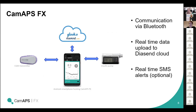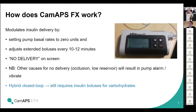Just by way of a reminder — many of you will be familiar with this — this is the CAM APS FX system: the Android smartphone which hosts the app, which acts as a CGM or glucose sensor receiver and communicates with the Dana RS, Dana R, or soon to be Dana I pump, and the data is automatically uploaded to the Diasend cloud. The system works by modulating insulin delivery, pushing the pump basal rates down to zero units and then allowing it to adjust an extended bolus every 10 to 12 minutes. This is really important in terms of understanding why certain settings make a difference with this system and why others don't.